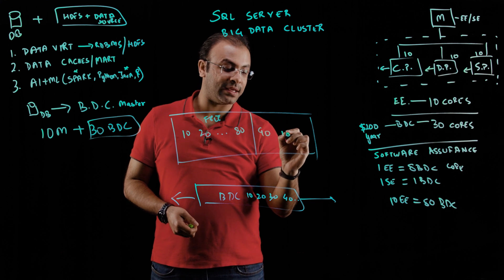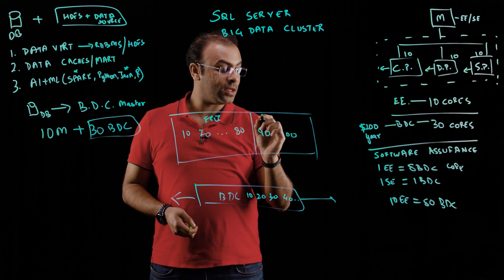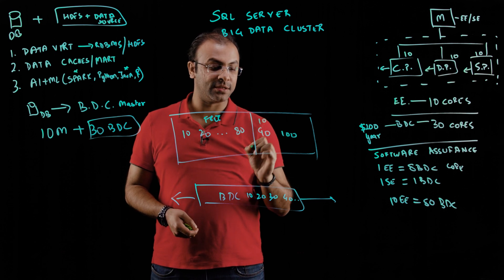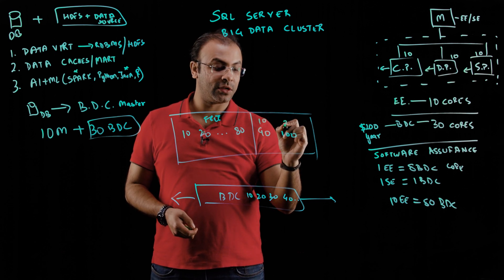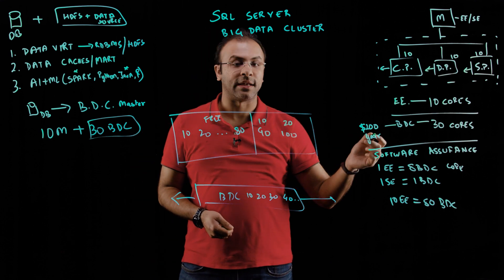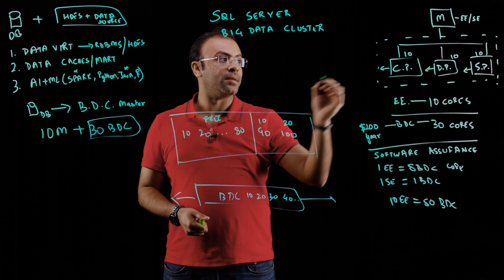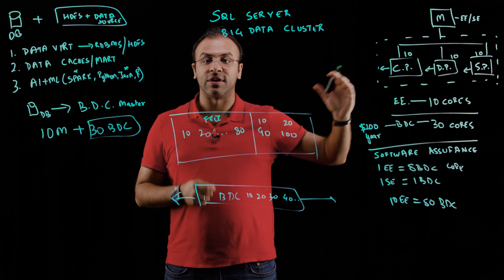When you went to 80, 100, you would start needing to license 10 additional cores here and 20 additional cores here for big data at $200 per core per year. And the master continues to stay.